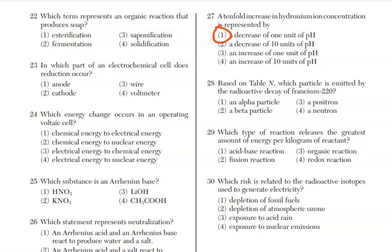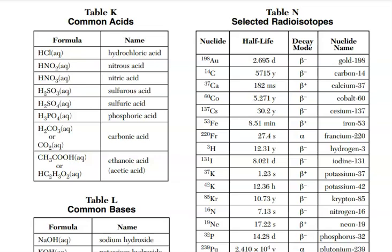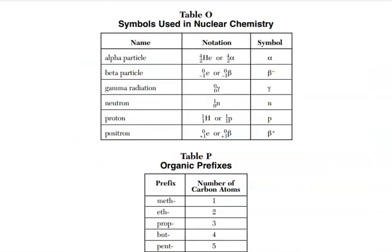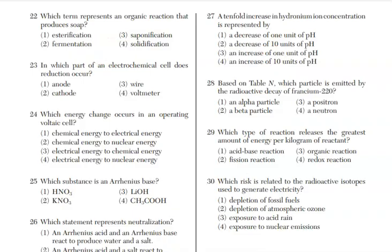For 28, based on reference table N, which particle is emitted by the radioactive decay of francium 220? Let's go look. Francium 220 listed on table N. We go ahead and we find it, and it has a decay mode here. It's showing you the symbol for an alpha particle. Now, if you didn't know what it was, don't guess. Just head over to good old table O, and you'll see that the symbol tells you you're dealing with an alpha particle. And the names are used as the choices. That's why you want to double check and make sure you have the name. For question 28, the answer is choice 1.